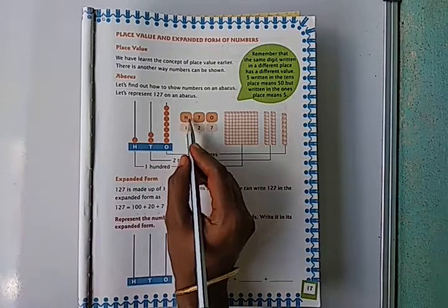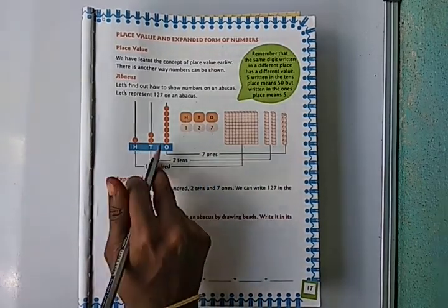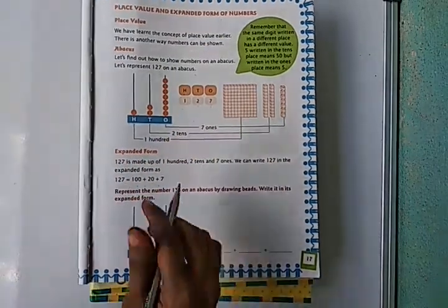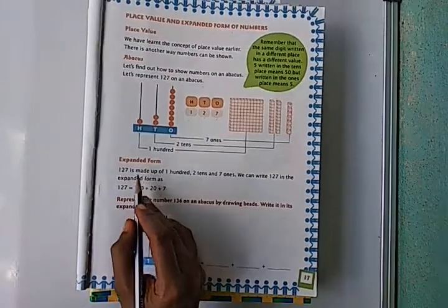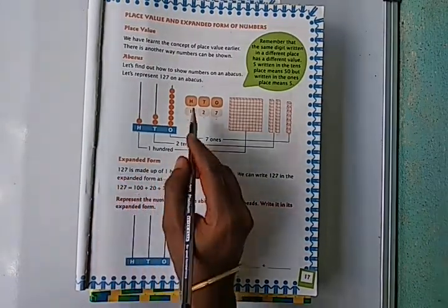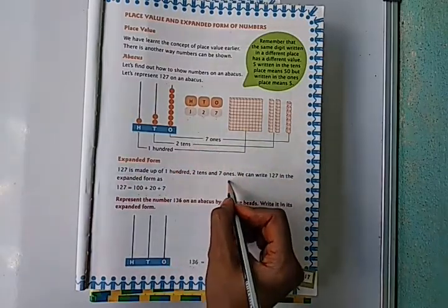In hundreds place one, so keep one bead on hundreds rod. This is the way to represent beads on abacus. Next, expanded form. 127 is made up of one hundred and two tens and seven ones. We know this one well.